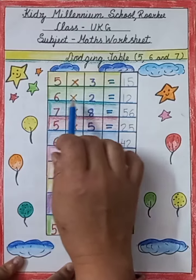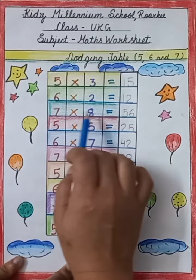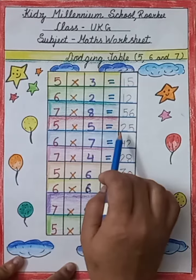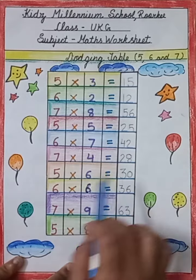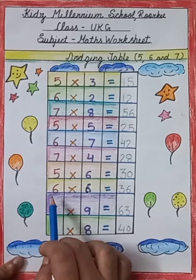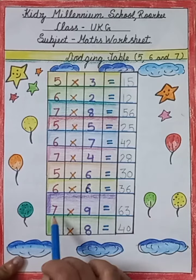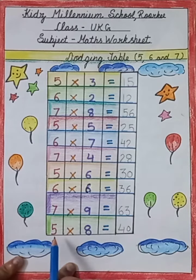Now we will repeat it again: 5 3 j 15, 6 2 j 12, 7 8 j 56, 5 5 j 25, 6 7 j 42, 7 4 j 28, 5 6 j 30, 6 6 j 36, 7 9 j 63, 5 8 j 40.